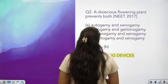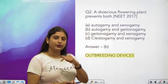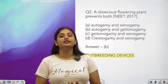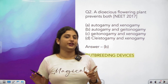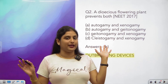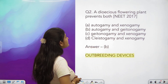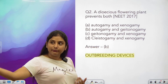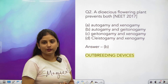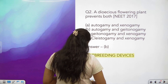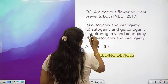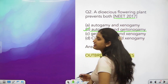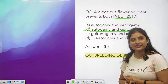Question number 2: a dioecious flowering plant. Dioecious plants are where unisexual flowers are present on the whole plant — the whole plant is either male or female. So pollen cannot come from the same plant; it will come from another plant. This prevents both autogamy and geitonogamy. This is also a question from 2017 — direct NCERT. You are noticing that the maximum questions are direct NCERT lines; only rare questions are application-based.